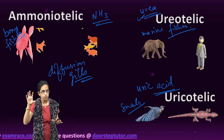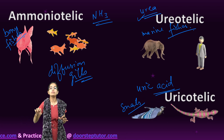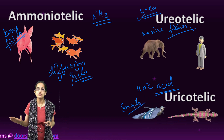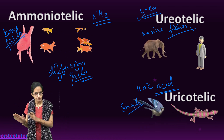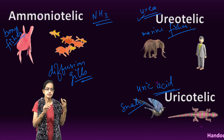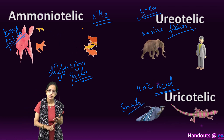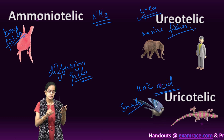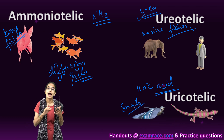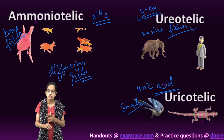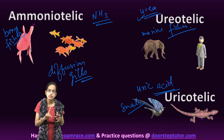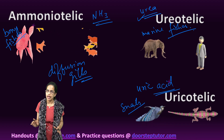Ammonia is the most toxic form, usually seen in aquatic animals, bony fishes, and amphibians. Ureotelic excretion is seen in mammals, terrestrial amphibians, and marine fishes. Uric acid is seen in reptiles, birds, insects, and land snails.